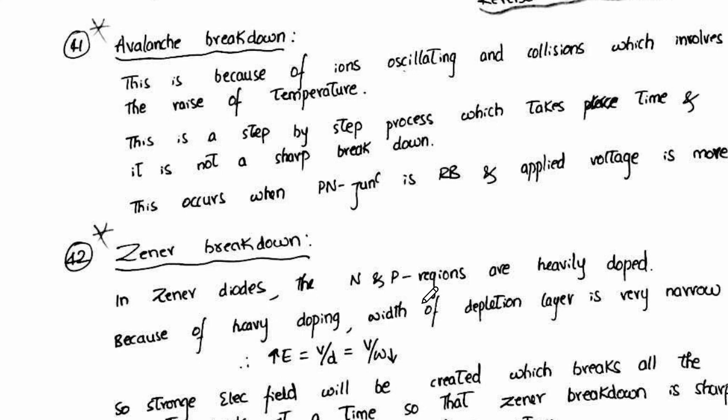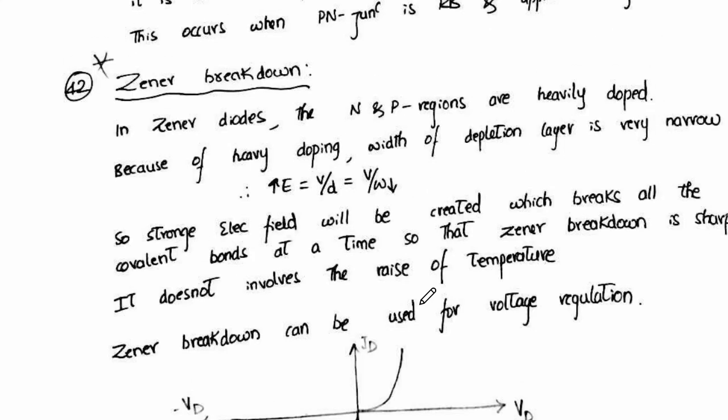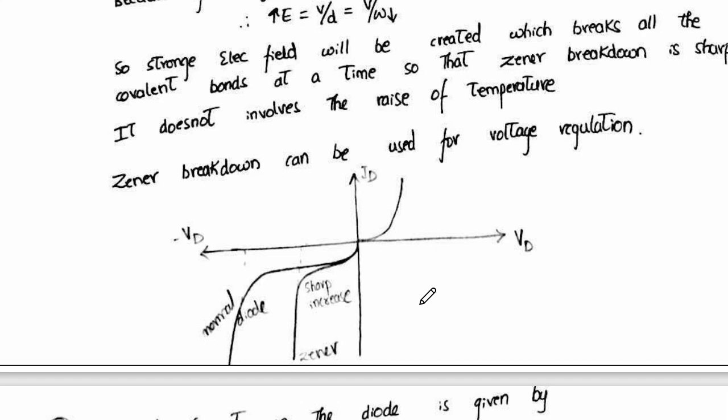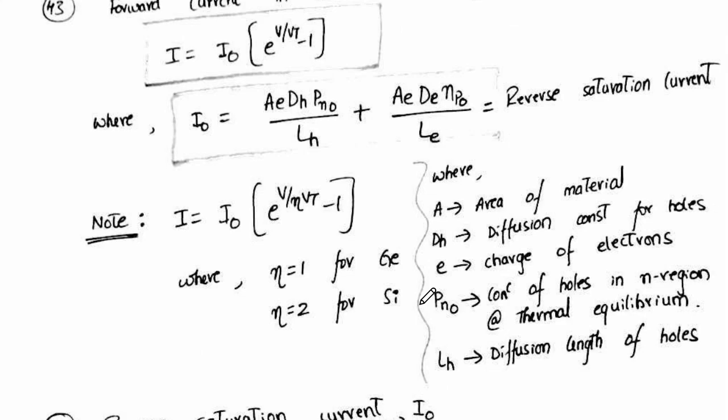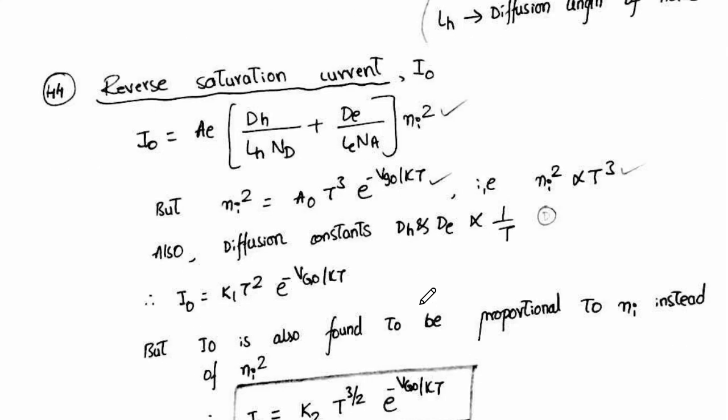Avalanche breakdown, zener breakdown. Forward current in the diode is given by various formulas and the reverse saturation current as well.